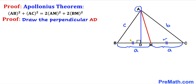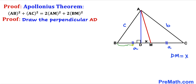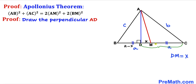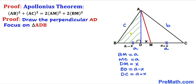Let's label side DM as x units. Then side BD is the whole side a minus x, so BD = a − x. Likewise, side DC is a + x. Now let's focus on triangle ADB. We'll label perpendicular AD as p, and median AM as lowercase n.